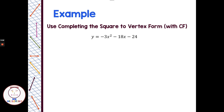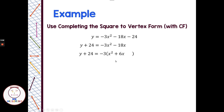Now, in some harder problems we run into with completing the square and changing to vertex form, we have to pull out a common factor. There are some similar steps to the last couple problems, but one additional harder step. To start, I want to add 24 to each side. Then, I can't do completing the square with a 3 and 18 — with these factors in front of the x — so I want to pull out a common factor of negative 3. If I pull out a negative 3, I'm left with x squared plus 6x, and I can complete the square.